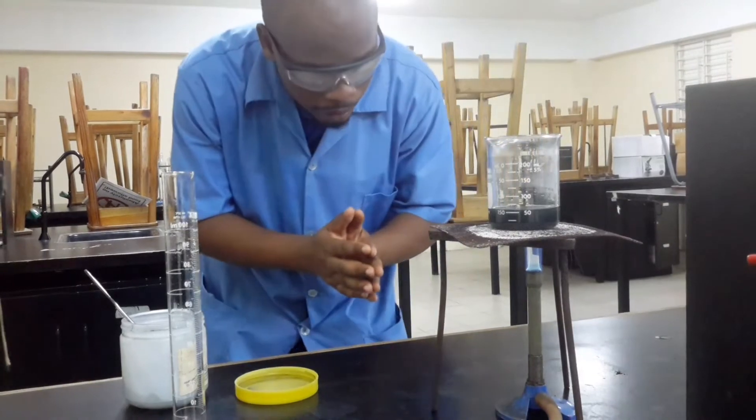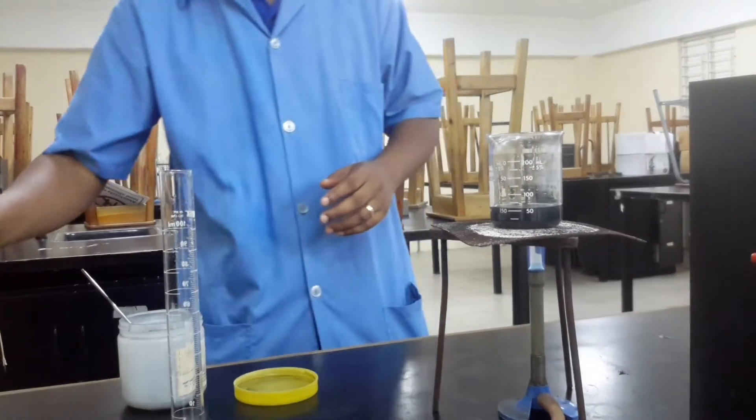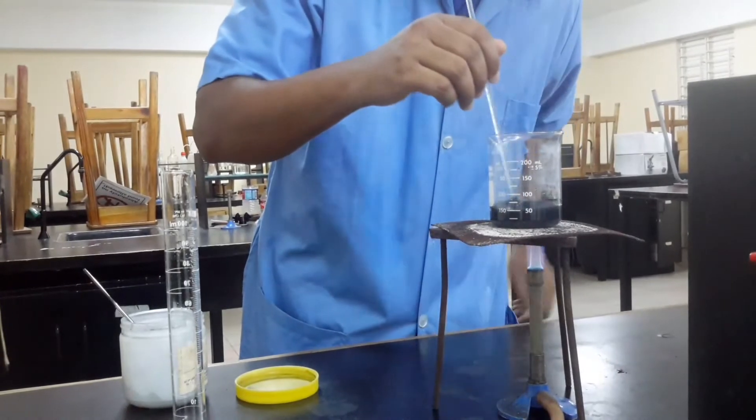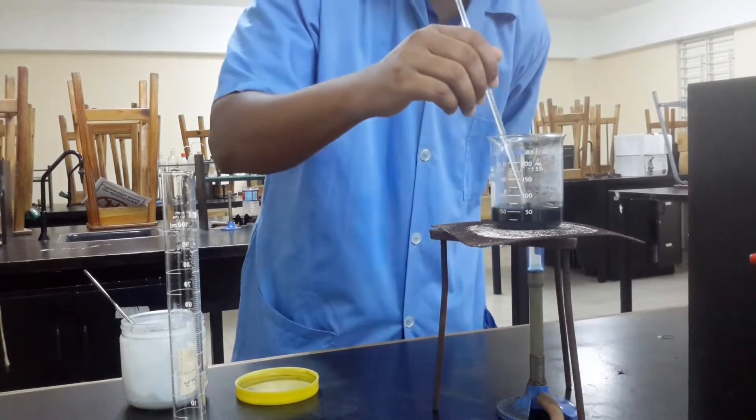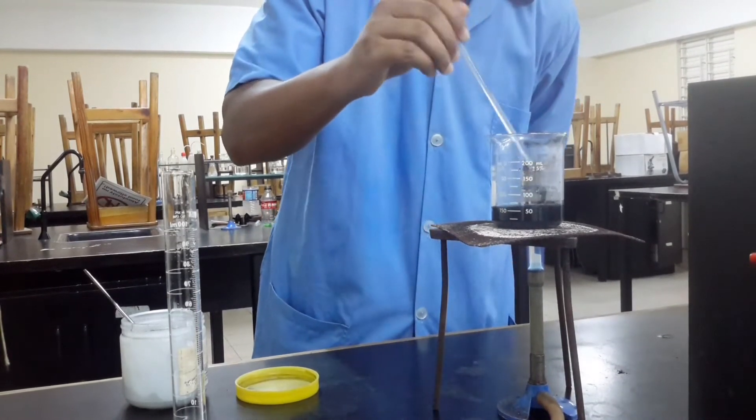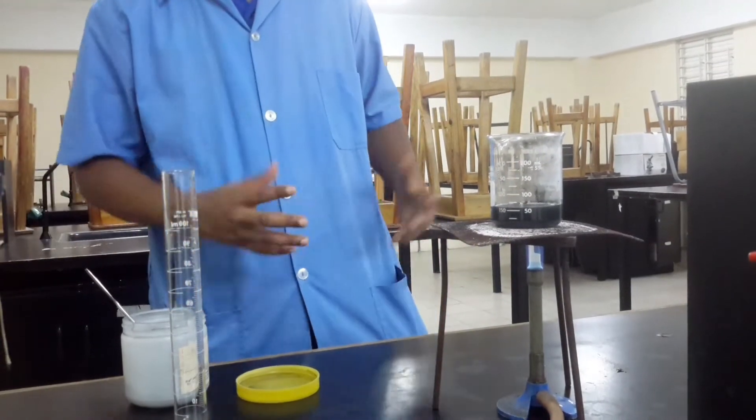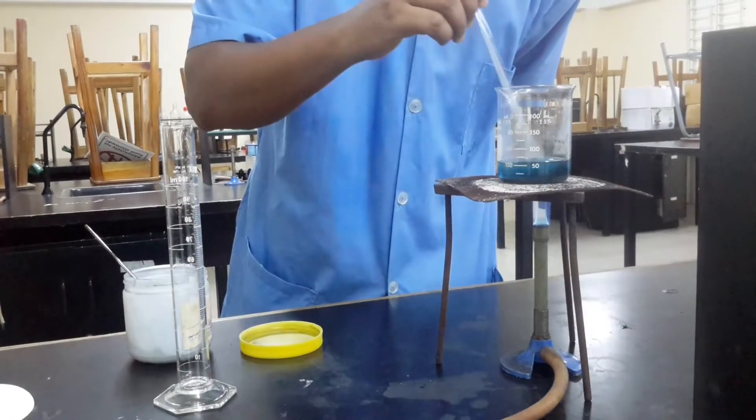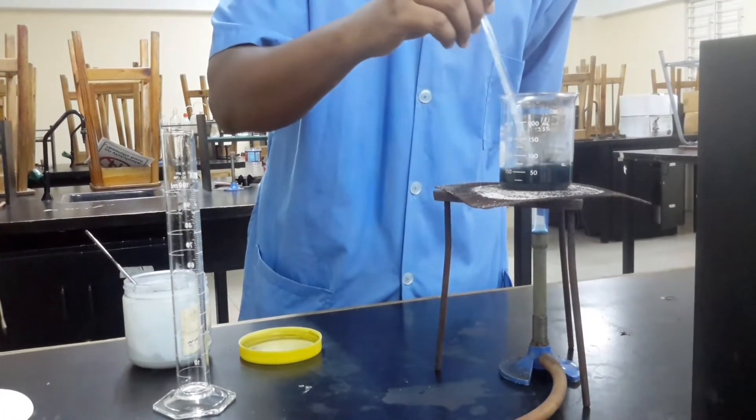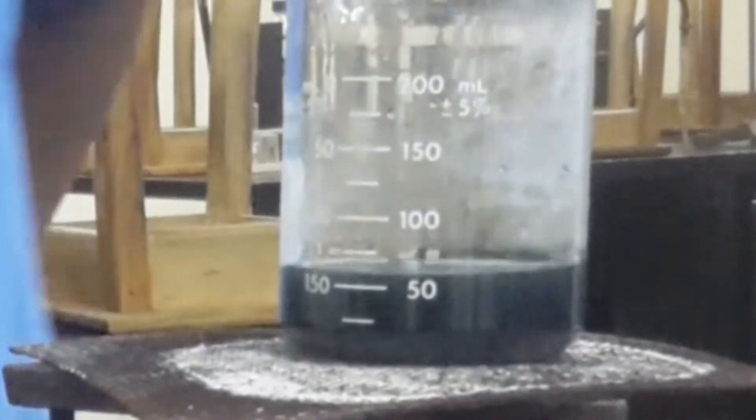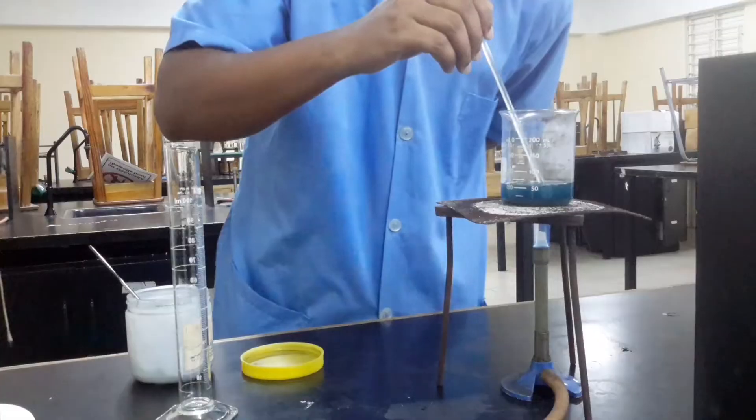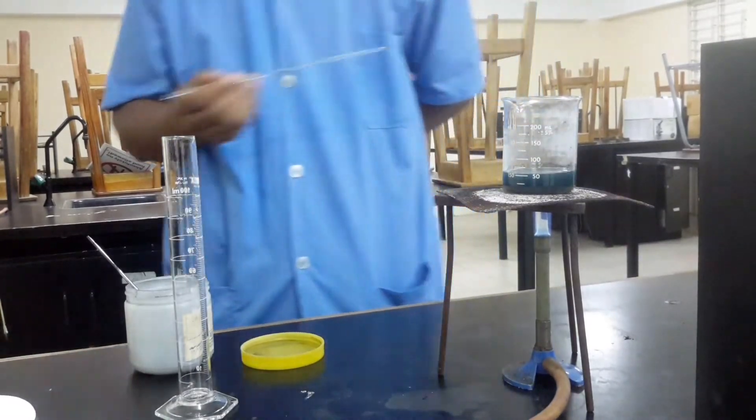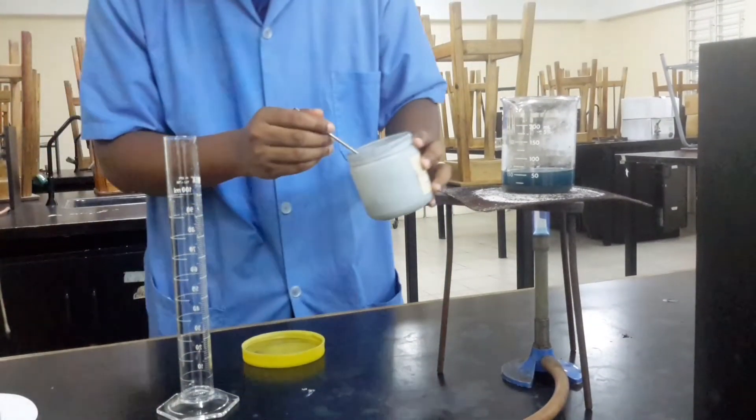We've added copper oxide until it's in excess but we're going to just give it a little time to heat up and see if we can get some more of it reacting. Let's just let the heat do its work and we wait. As the solid settles we're seeing a little blue. We can just add a little bit more copper oxide.